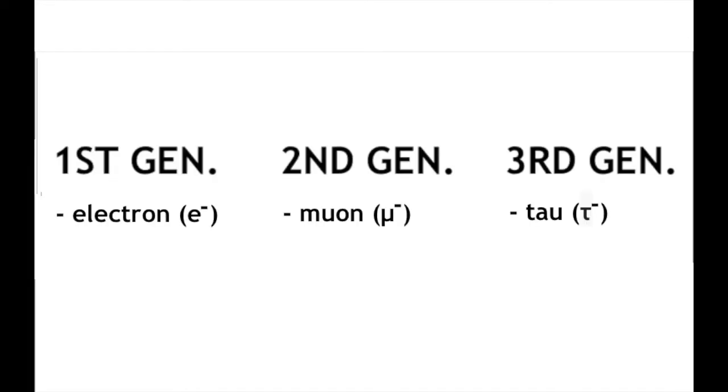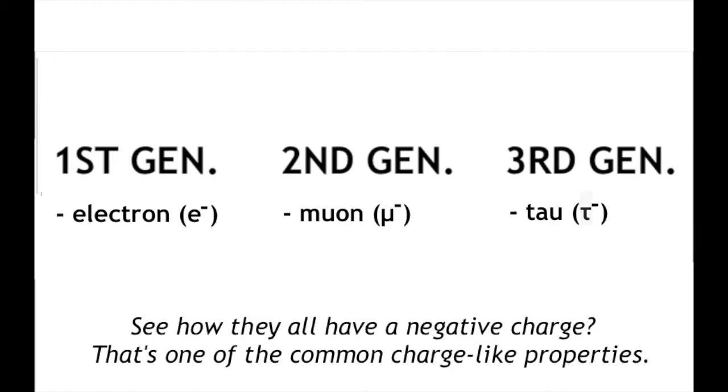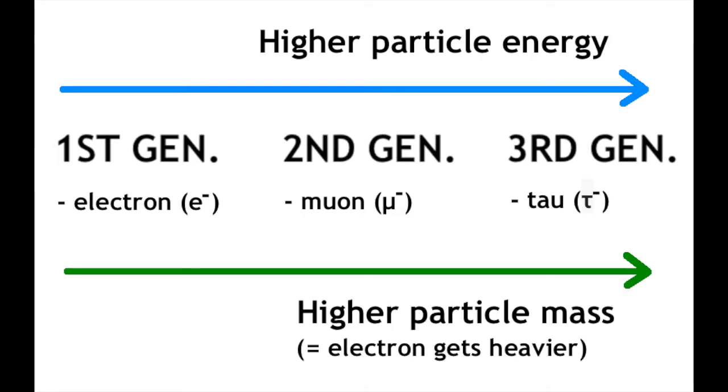For the other two generations, instead of electrons, there are particles called muons and tau particles, and their charge-like properties are similar to electrons. You can think of it this way. Just like quarks of higher energy go into a higher generation number, so do the electrons.